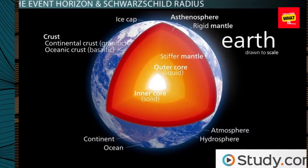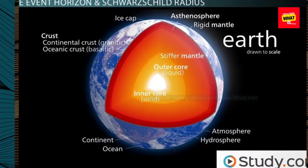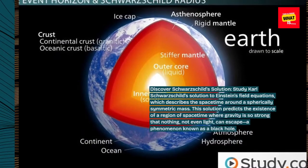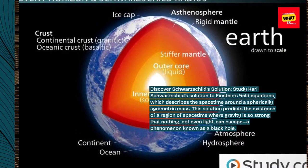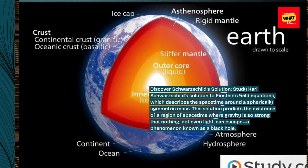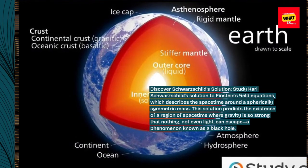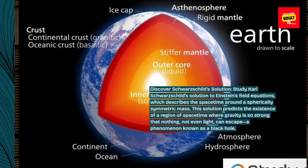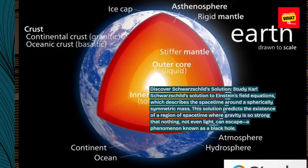Discover Schwarzschild's solution. Study Karl Schwarzschild's solution to Einstein's field equations, which describes the space-time around a spherically symmetric mass. This solution predicts the existence of a region of space-time where gravity is so strong that nothing, not even light, can escape — a phenomenon known as a black hole.